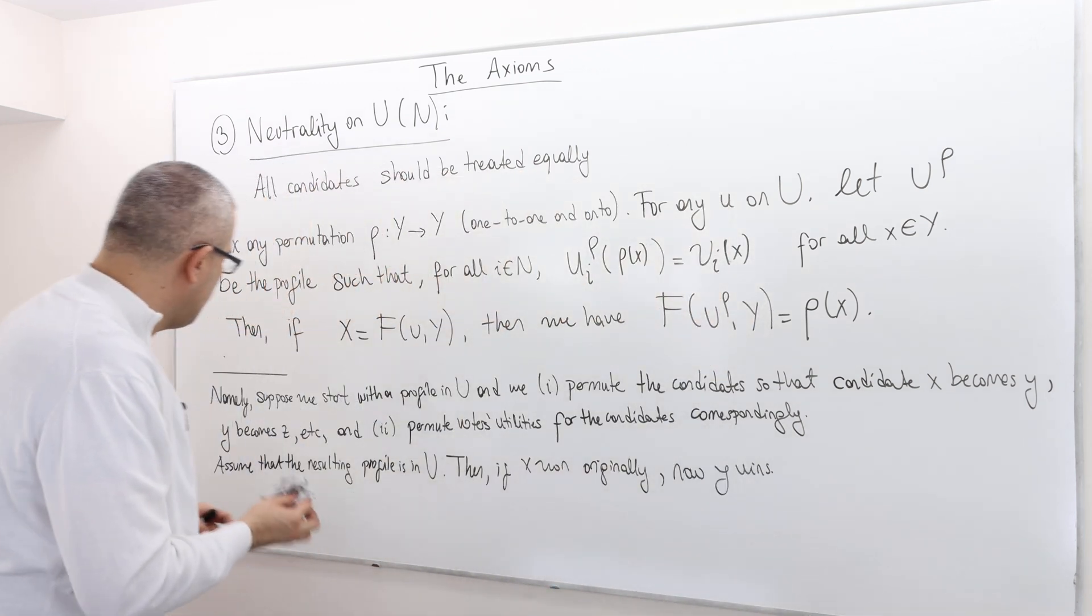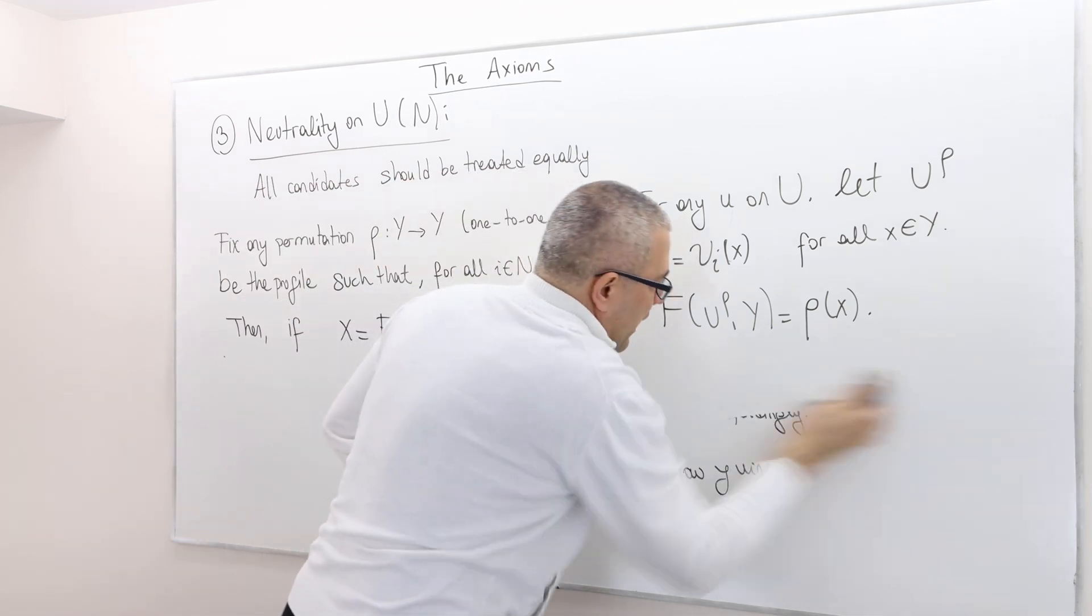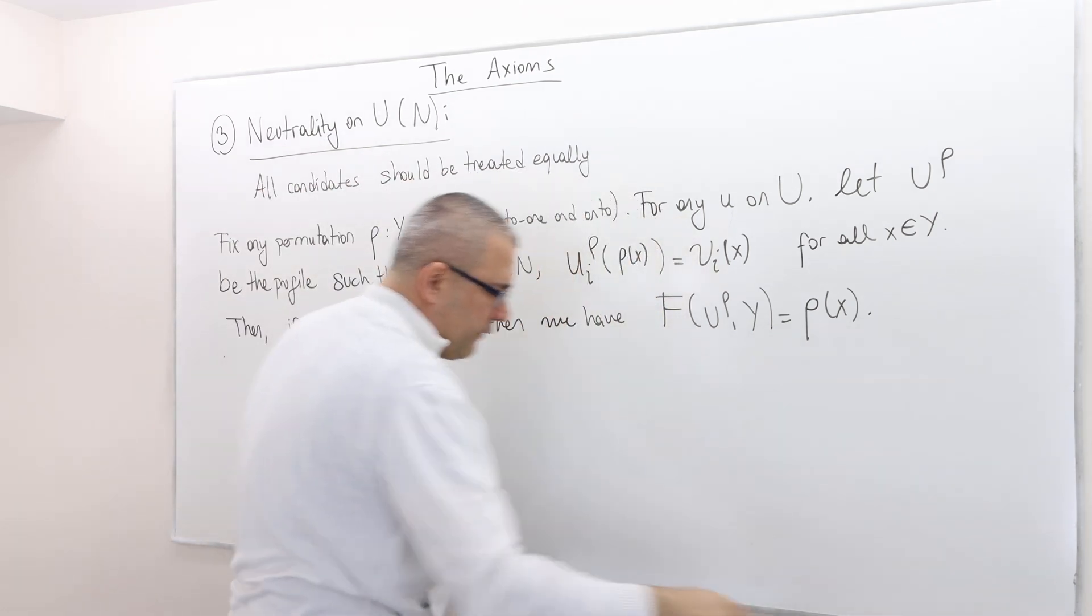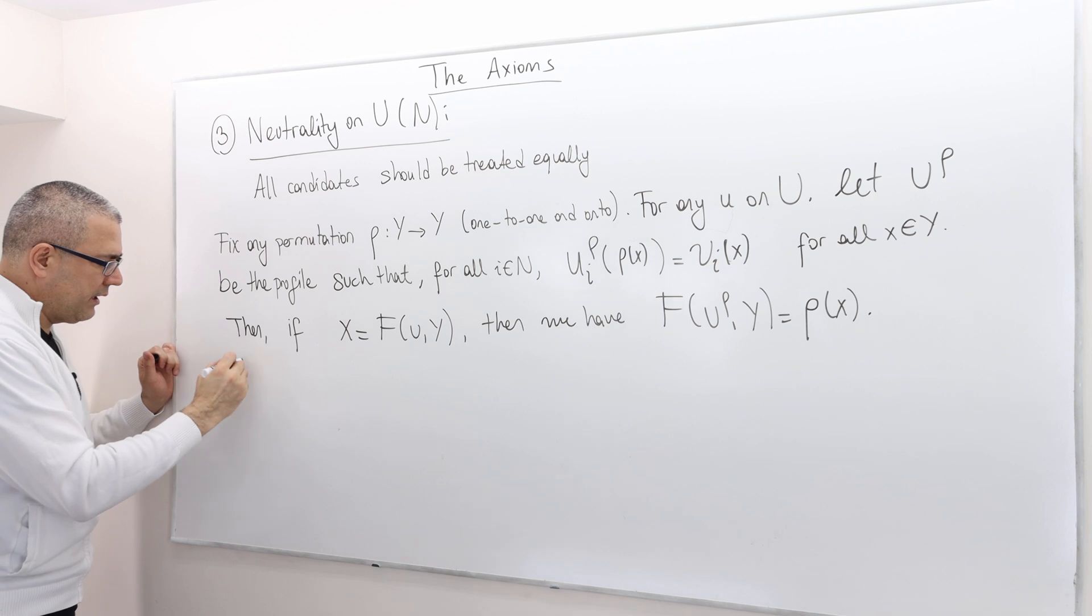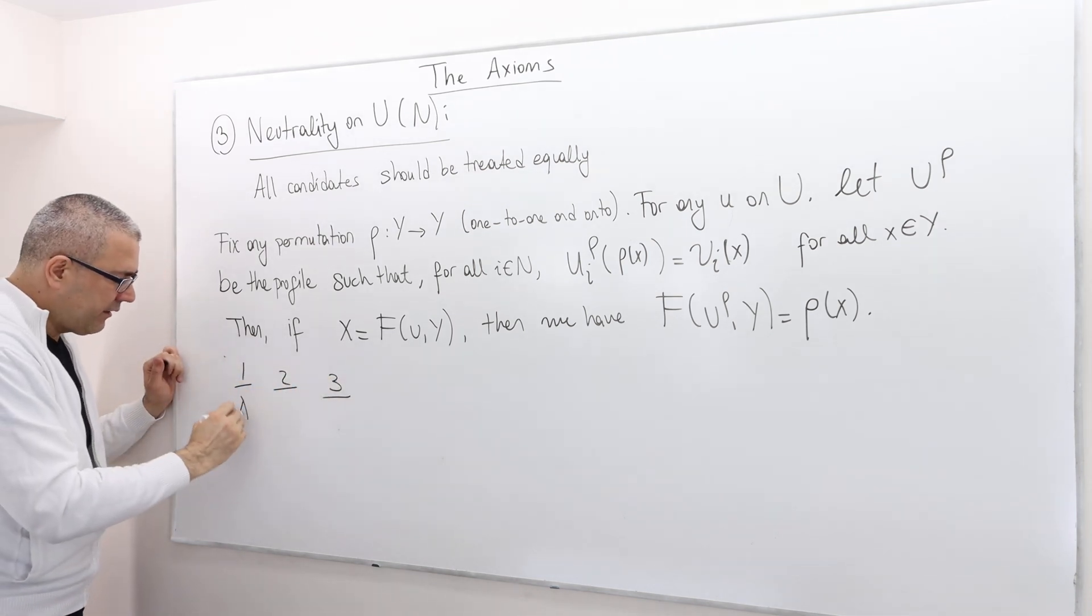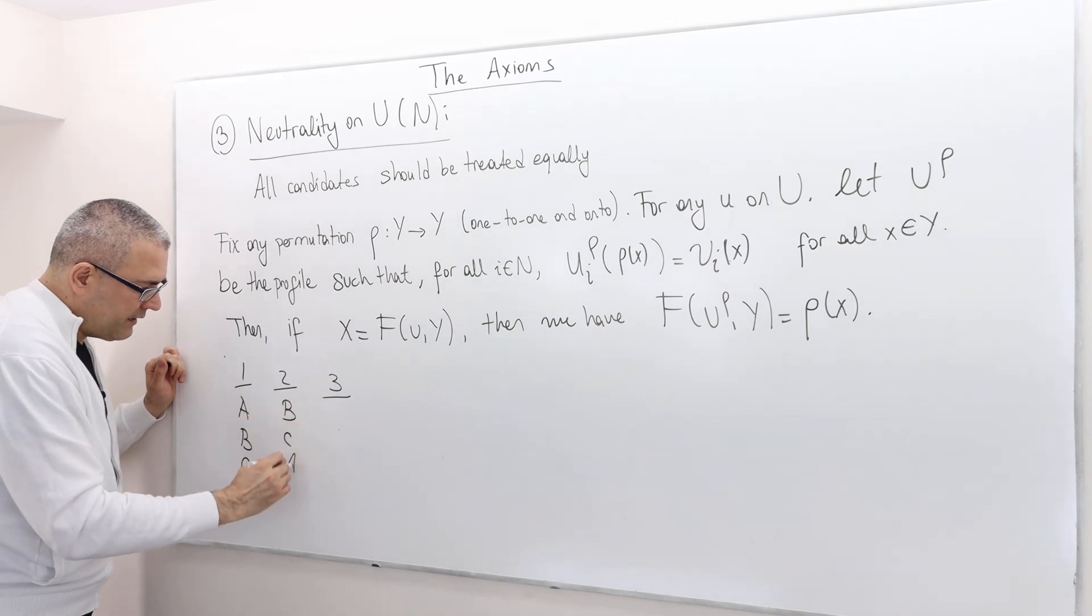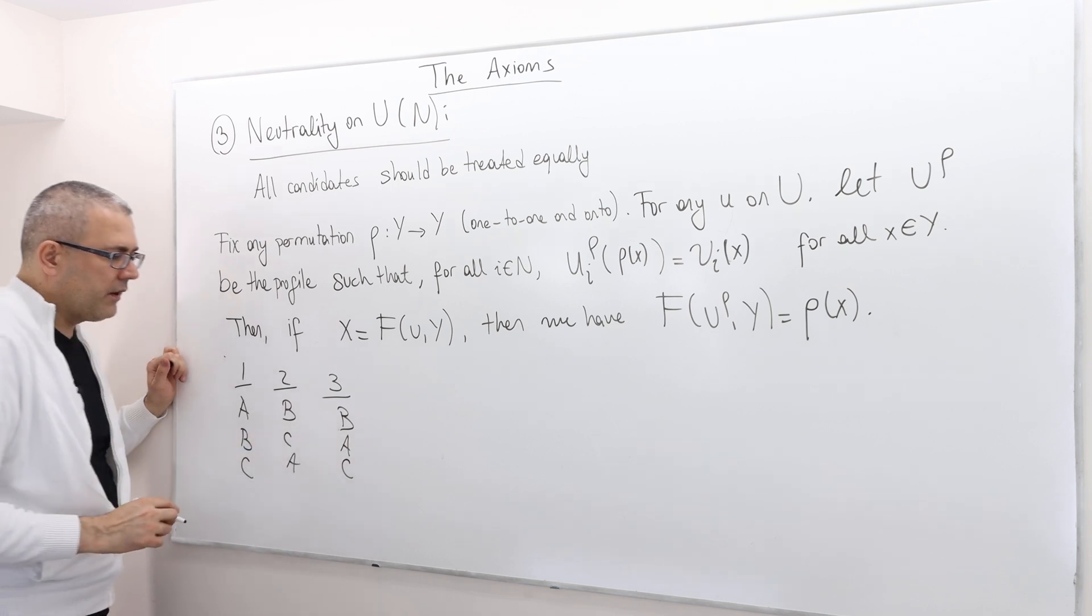let me try to give you an example, and hopefully it clears the air. Here, I'm going to use a very simple example. I have one, two, three voters, three alternatives or candidates: A, B, C; B, C, A; B, A, C.